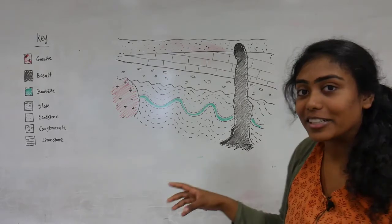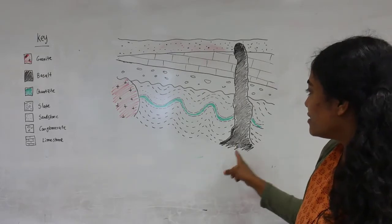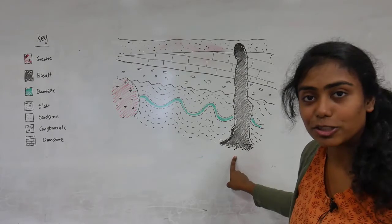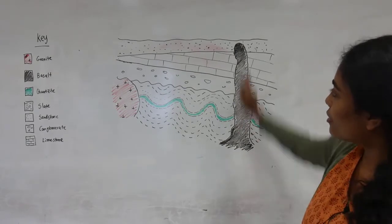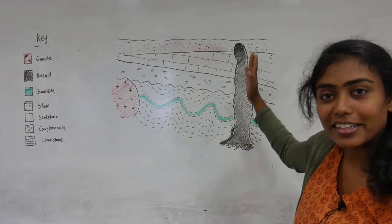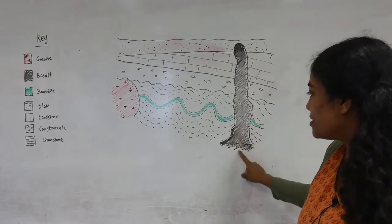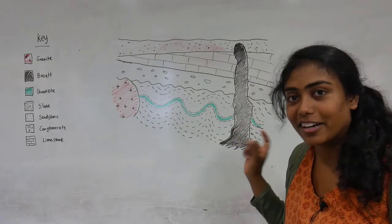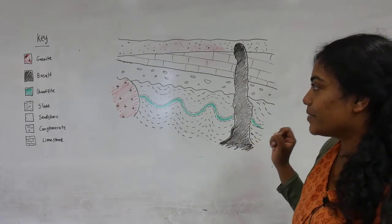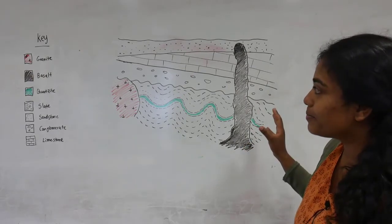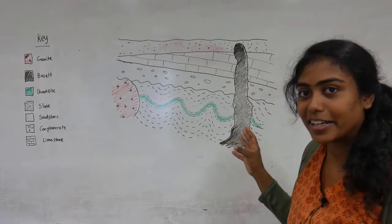And the very final thing to have happened here is this basaltic intrusion, which came up and cut through all of these layers. So this is the youngest unit here. So that's the relative sequence of events that happened here.